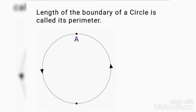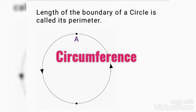We give a special name for the perimeter of a circle. It is called circumference. How can we calculate the circumference of a circle? What is its formula? Let's find out.